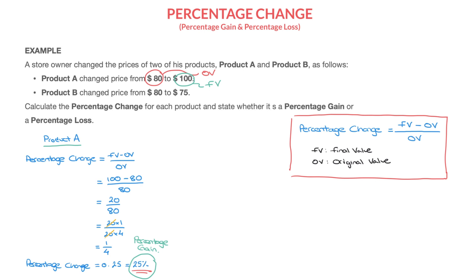It's worth pointing out that a percentage gain tells us the percentage by which the original value has been increased. This 25% gain means the original price of Product A went through a 25% increase, leading to its final price of $100. Also, if you ever have trouble converting a decimal to a percentage, a useful trick is to multiply the decimal by 100 — that gives you the number to write in front of the percentage symbol. For example, 0.25 times 100 equals 25.